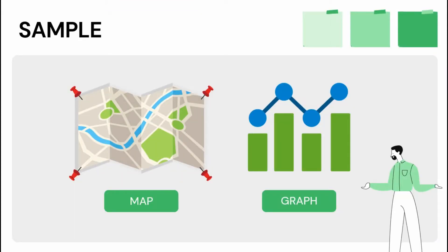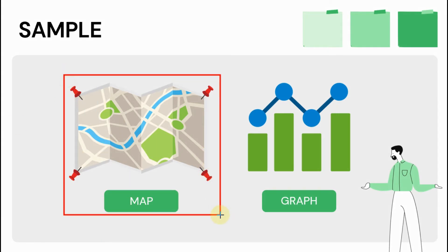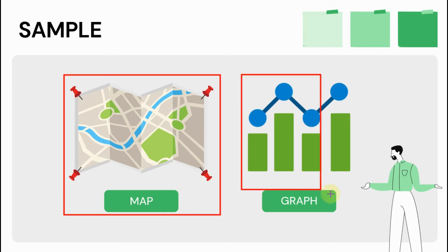Although we might not feel that in instances we are already using models — for example, maps and plans are models of the layout of roads, rivers, buildings, or other features of our physical environment.